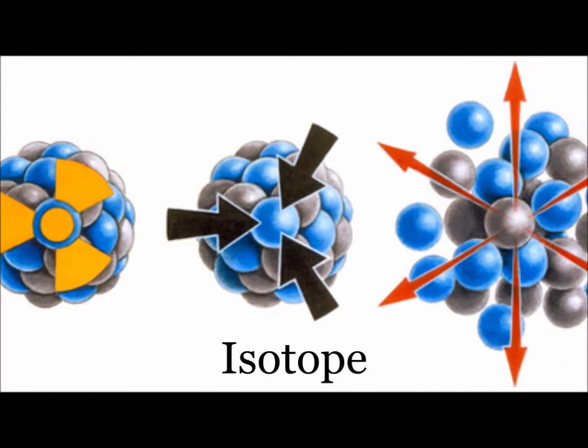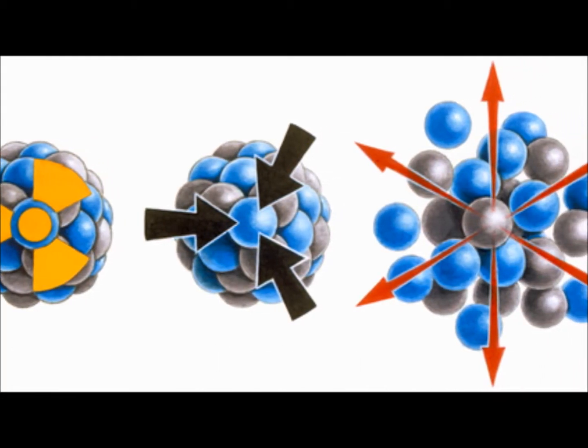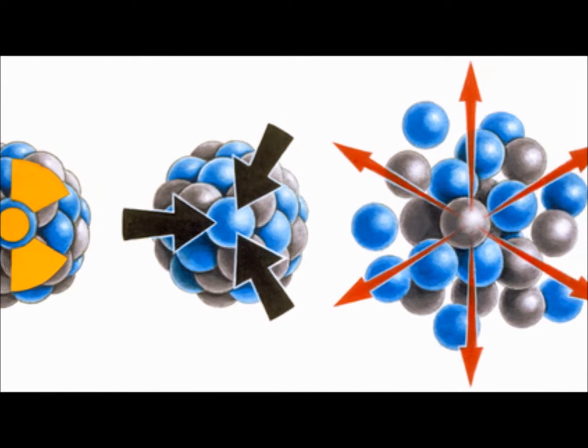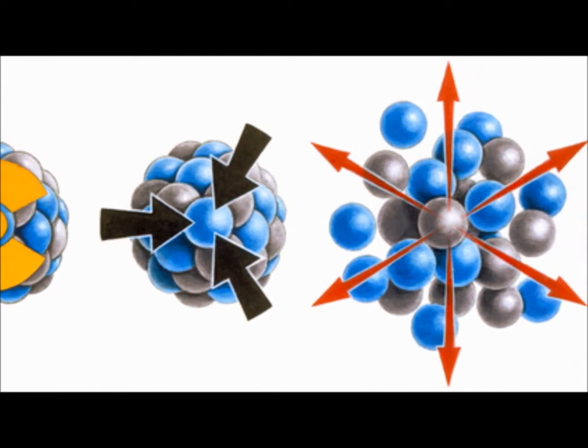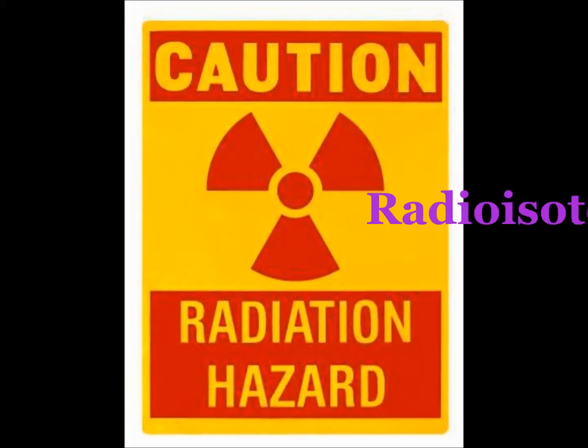Most isotopes are stable, meaning they will stay the same forever, but some are unstable, which means that over time they can change. These are called radioisotopes.